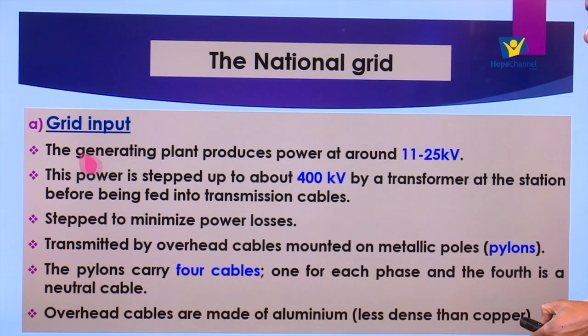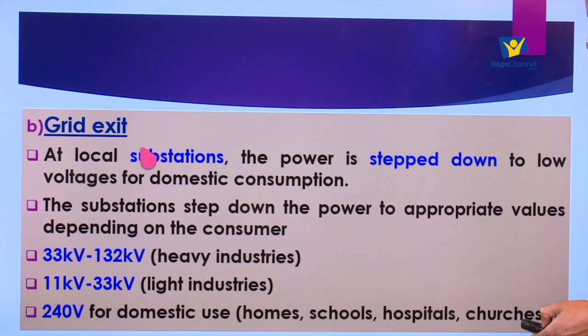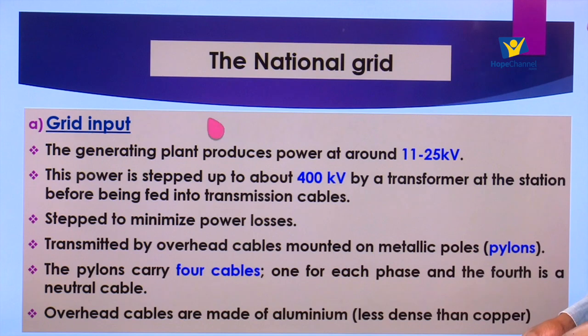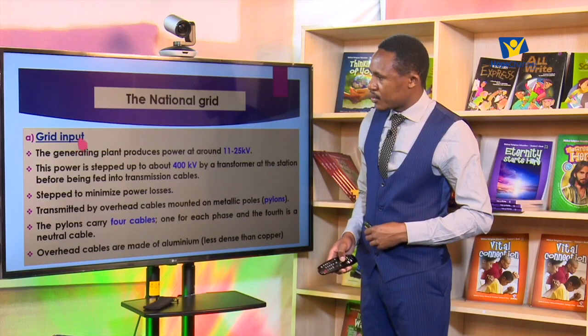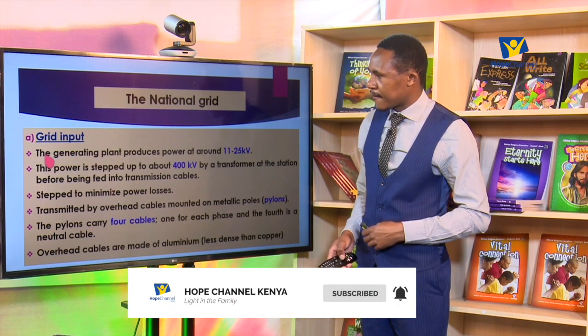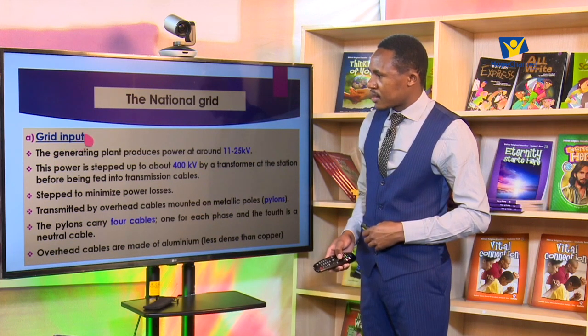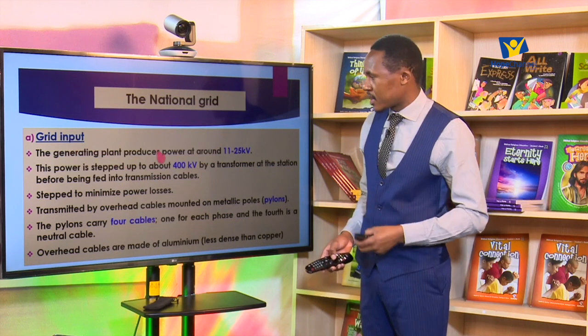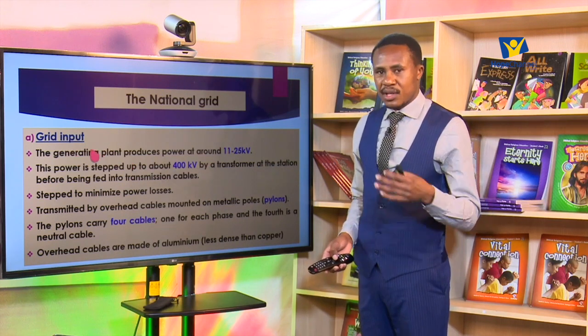In the national grid we talk about two things: the grid input and the grid exit. The grid system is an interconnection linking all power plants, transmission cables, and substations. The grid input is usually the generating plant itself — for example at Olkaria we have a grid input because we have a generating plant. Once the power is generated, it is fed into the national grid system.